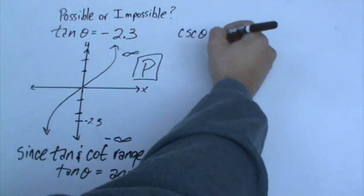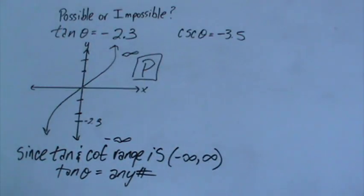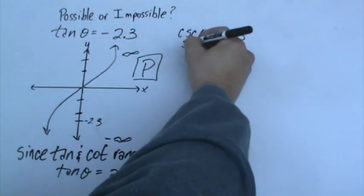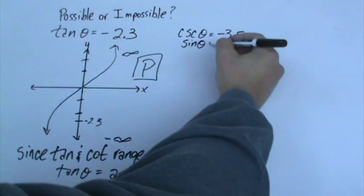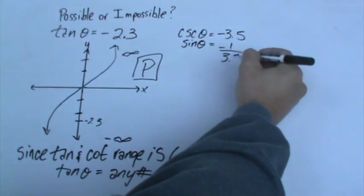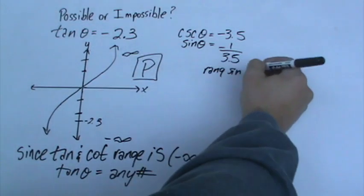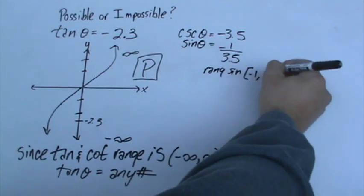We're going to do cosecant of theta equals negative 3.5. Personally, I don't really like working with cosecant. So what we're going to do is change this to sine because it's reciprocal. So we're going to rewrite it as negative 1 over 3.5. So what is the range of sine?